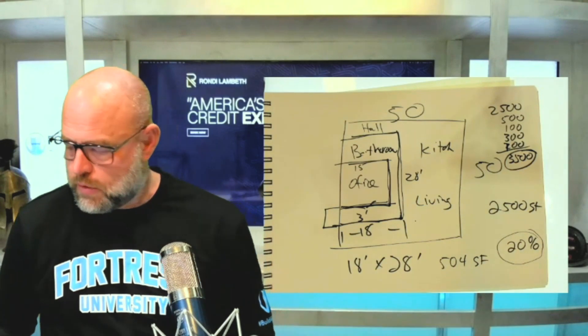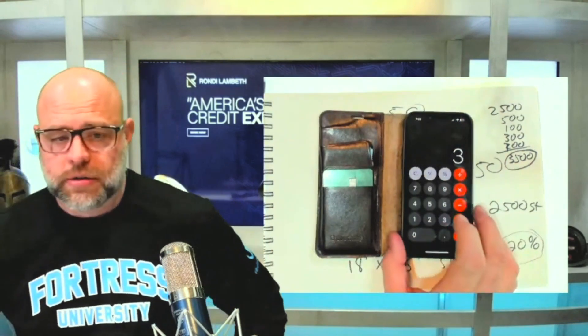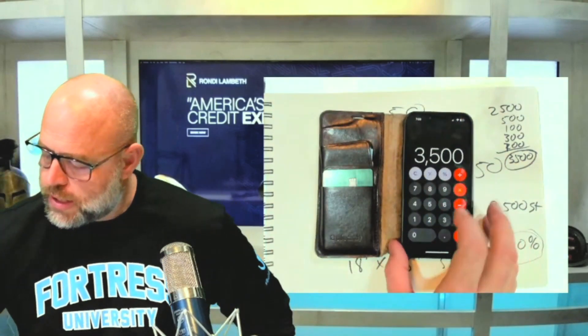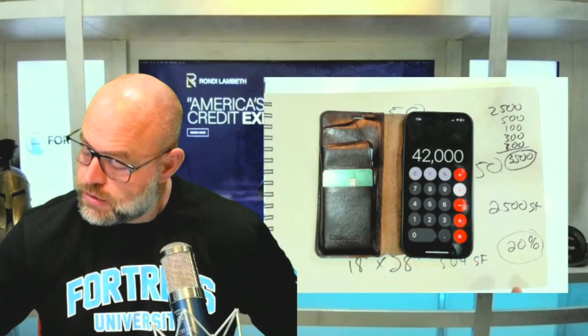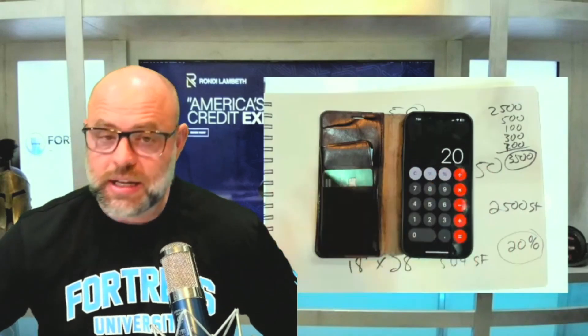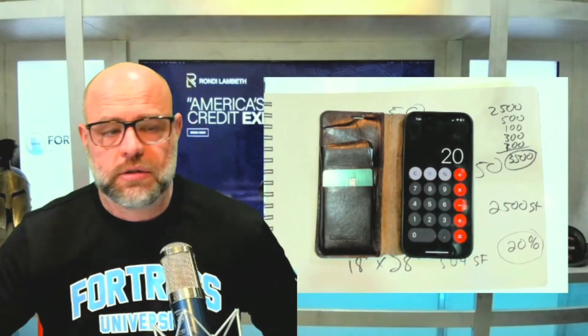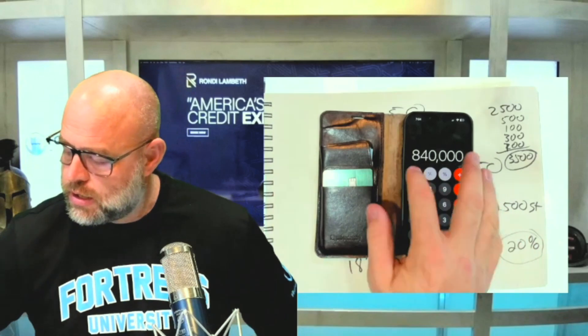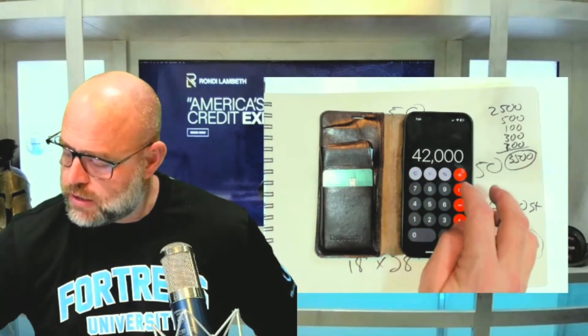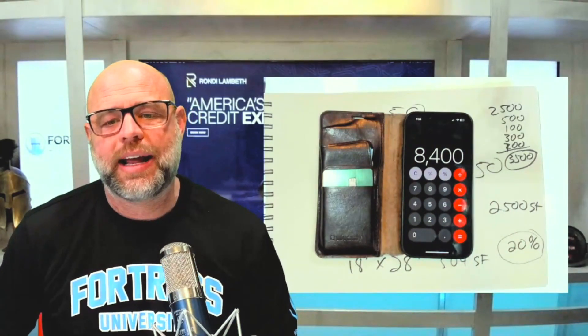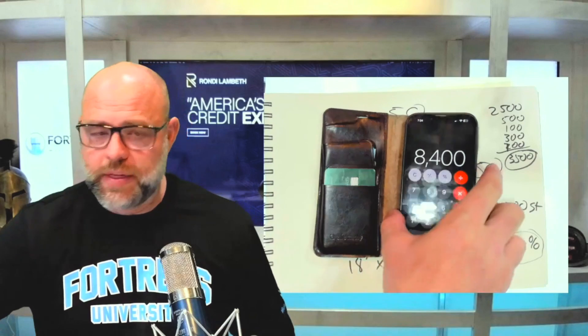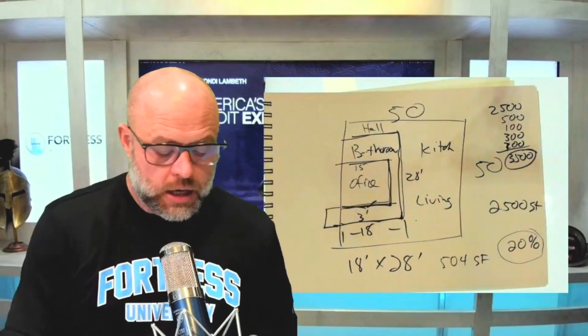So now if I take my calculator—that's $3,500 times 12 months. That was $42,000 I was spending on my house, times 20%, because I'm using 20% of the square footage for my business. $42,000 times 20%. That's $8,400 write-off that I got as a tenant. So that's $8,400 that I got the write-off.